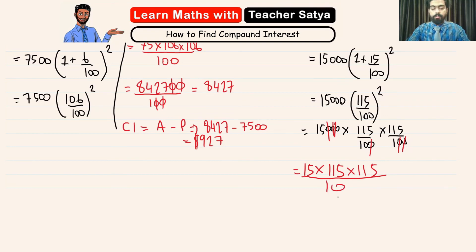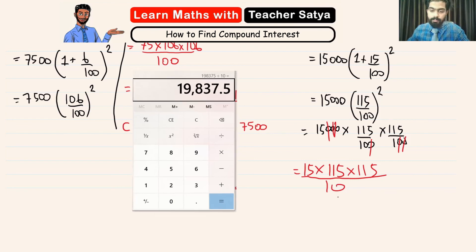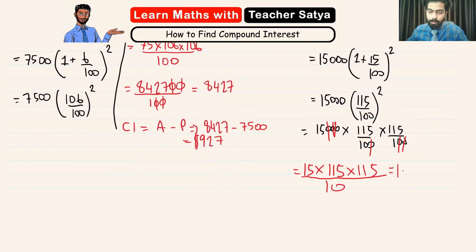So, what we have now is we have 15 times 115 times 115 divided by 10. Now, let's use the help of a calculator. 15 times 115 times 115 and this take this divided by 10. We would get 19837.50. So, 19837.50 dollars is our amount.